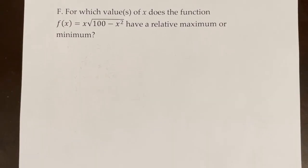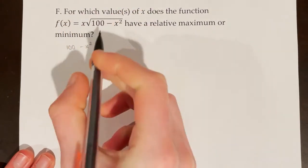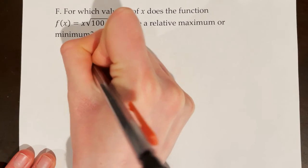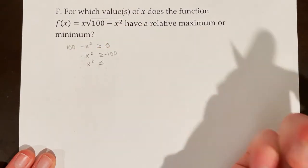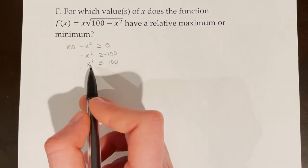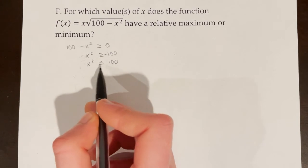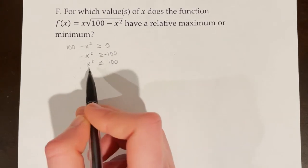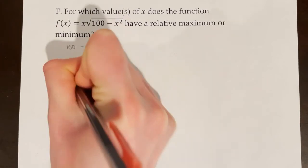For which values of x does the function f of x equals x times the square root of 100 minus x squared have a relative maximum or minimum? The first step is to identify the domain. Since I can't take the square root of a negative number, 100 minus x squared must be greater than or equal to 0. This means x squared must be less than or equal to 100, so x cannot be below negative 10 or above 10. The domain is the closed interval from negative 10 to 10.